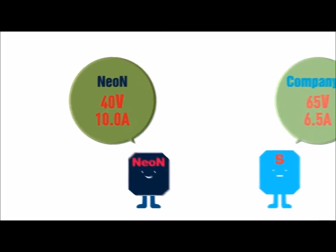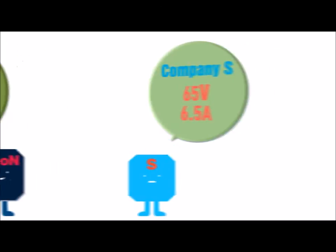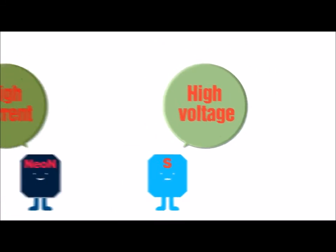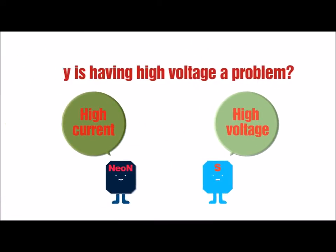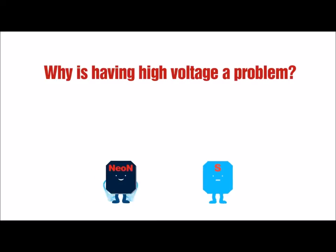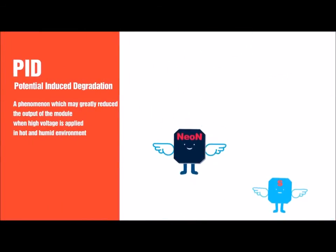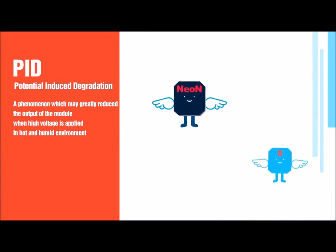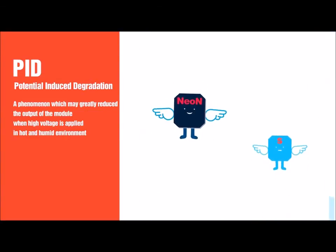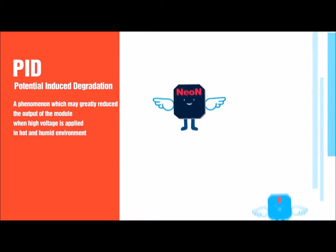LG Mono X Neon has high current capacity, whereas company S's cells have high voltage. Why is having high voltage a problem? It is due to potential-induced degradation, a phenomenon which may greatly reduce the output of the module when high voltage is applied in hot and humid environments.